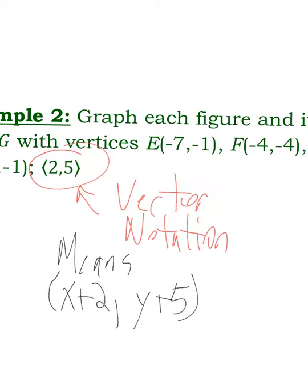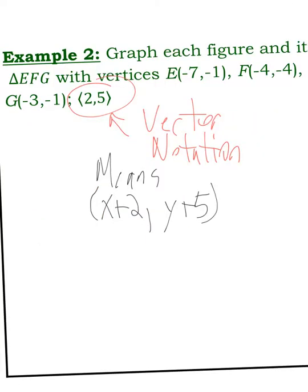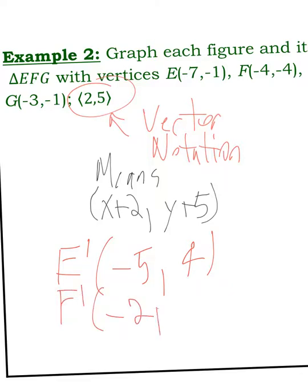So I just translated. Here's another example with vector notation. So as I mentioned earlier, I'm just going to add 2 to all the x coordinates and then add 5 to all the y coordinates. So E prime is going to be at negative 7 plus 2 is negative 5. Negative 1 plus 5 is 4. F prime is going to be at negative 4 plus 2 is negative 2. Negative 4 plus 5 is positive 1.